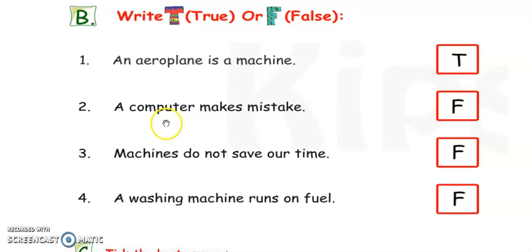Next, number 2. A computer makes mistakes. No. Computer never makes mistakes. It is a wrong sentence. So, it is false. And for False, you have to write F.